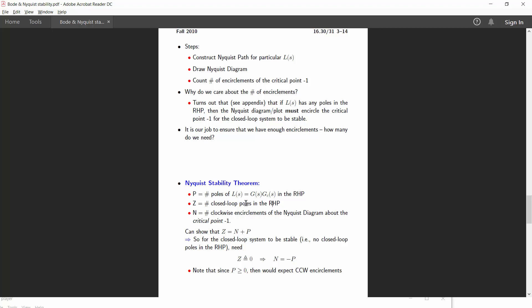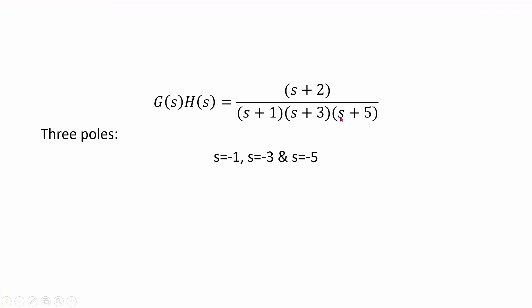So let us take an example. Let us say we have a transfer function given as GHS equal to S plus 2 divided by S plus 1 into S plus 3 into S plus 5. So there are three poles in this which are S equal to minus 1, minus 3 and minus 5.